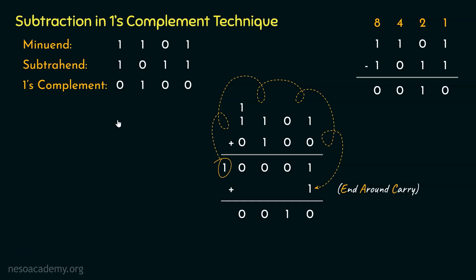Remember: in one's complement technique we perform addition using the one's complement (toggled bits) of the subtrahend. When we get the end-around carry, that carry signifies the minuend is magnitude-wise greater than the subtrahend. That is true here since 1101 (13) is greater than 1011 (11). If no carry is generated, that would signify the minuend is less than the subtrahend, indicating a negative result.